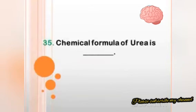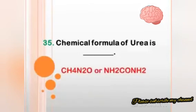What is the chemical formula of urea? Answer: CH4N2O.